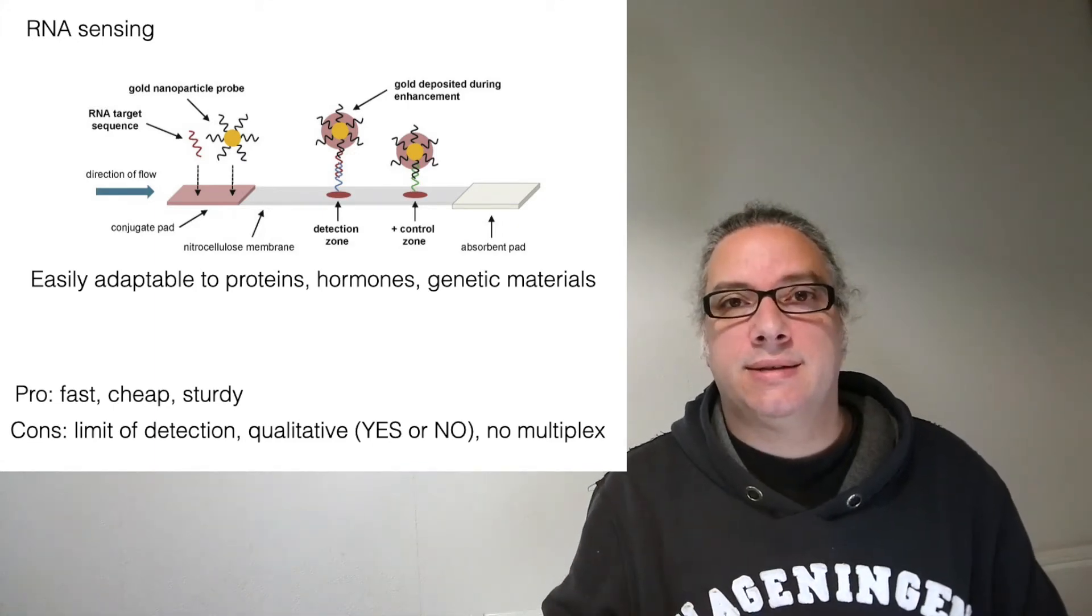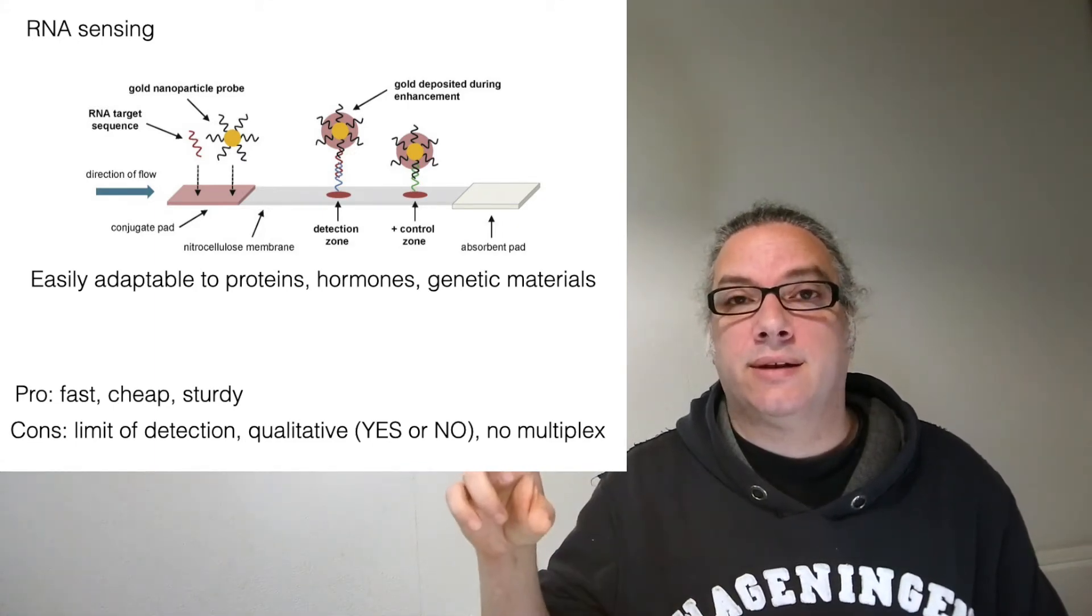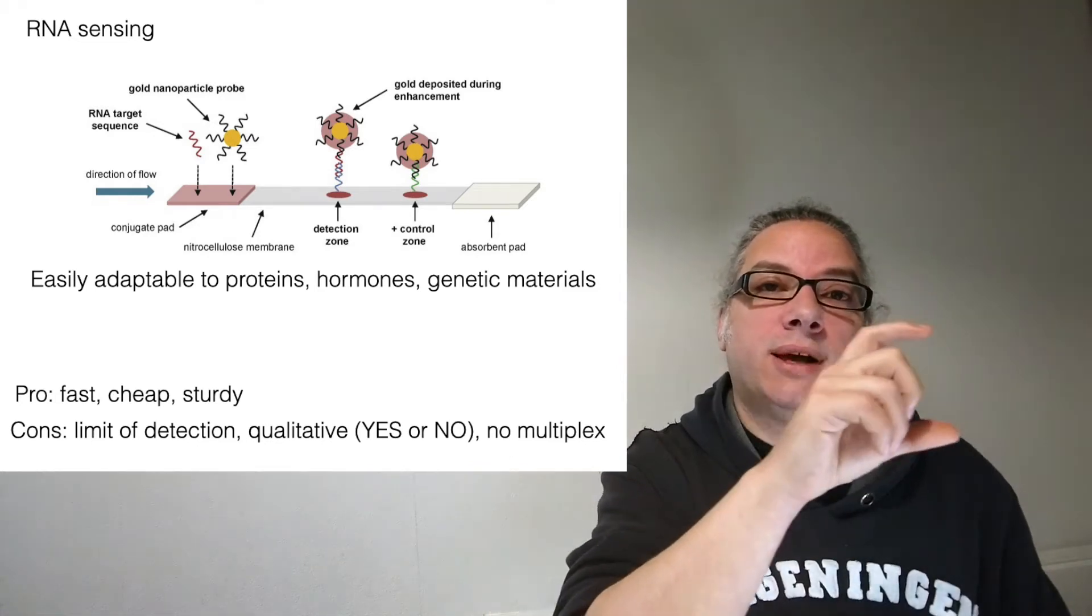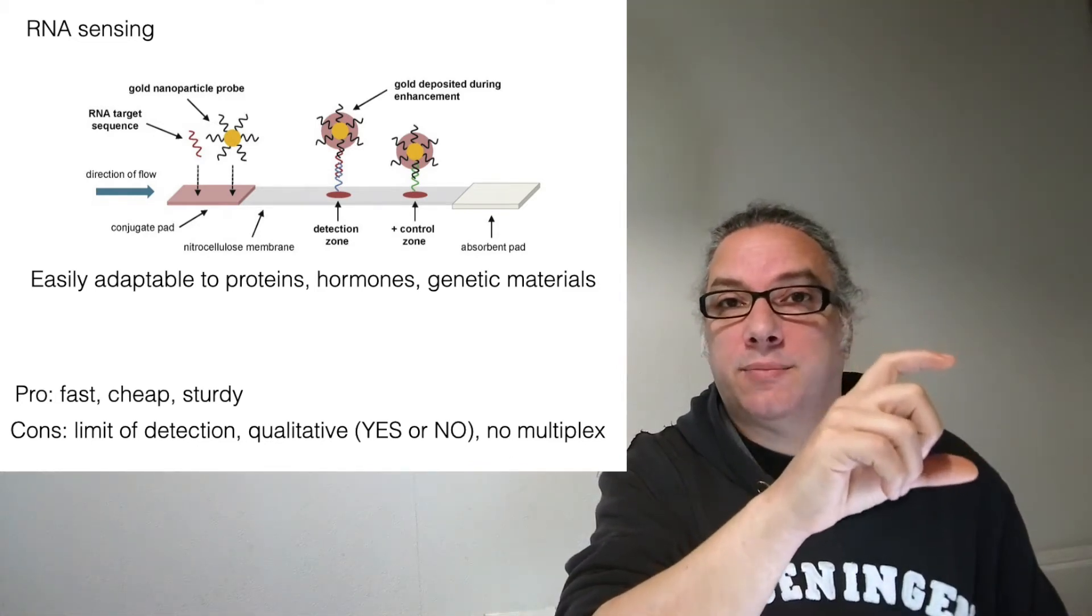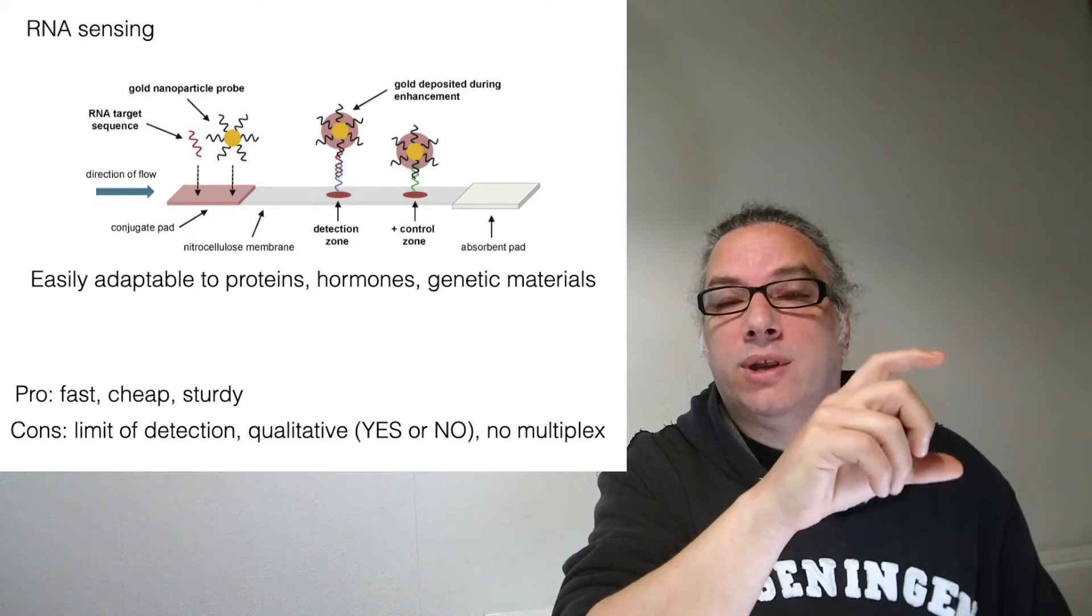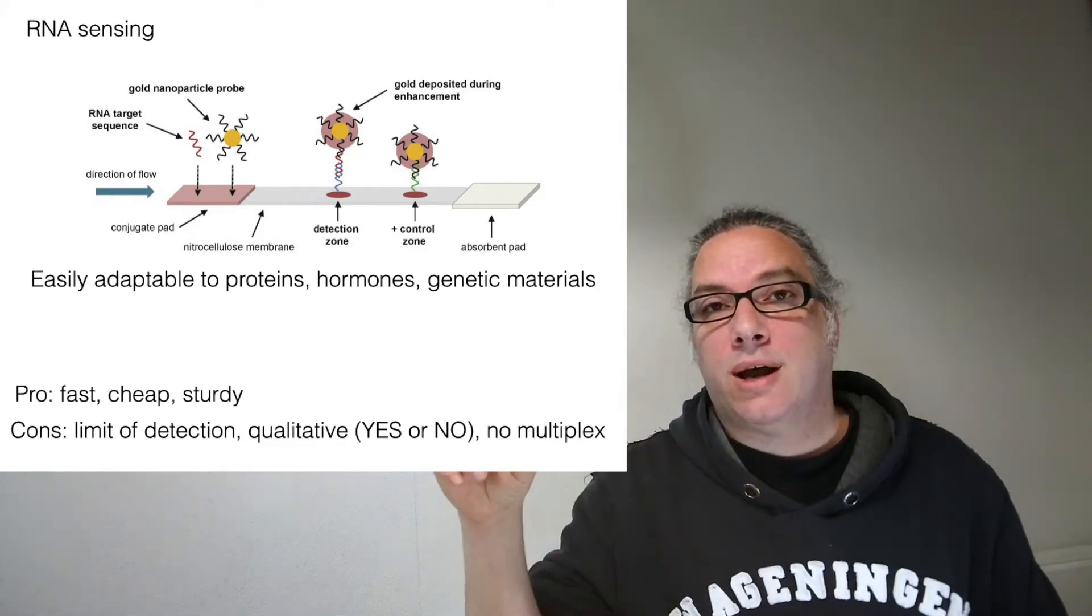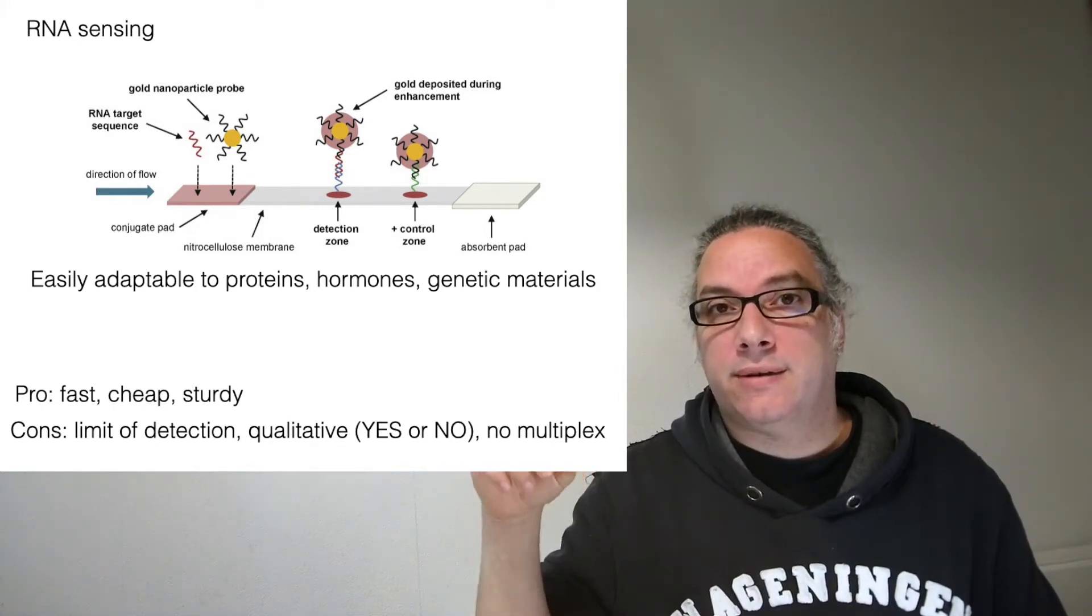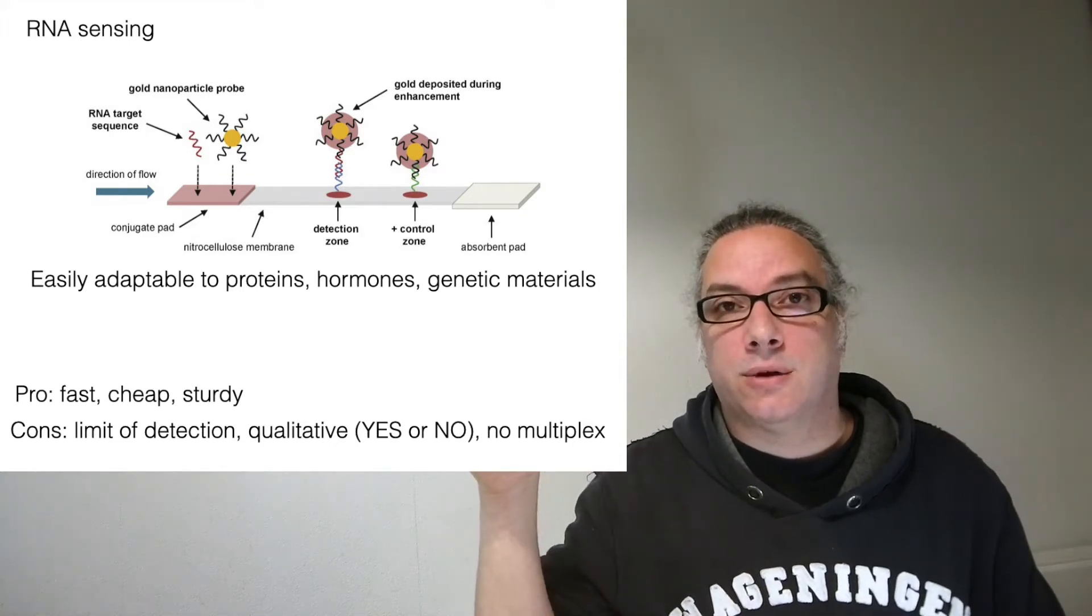For example, I can put single-strand RNA on paper to detect my analyte, which is another part of RNA. When they flow together, they'll recognize each other, form double strands, and this double strand can also bind the nanoparticles on top.